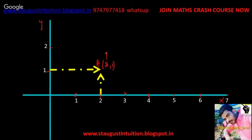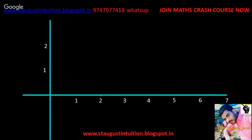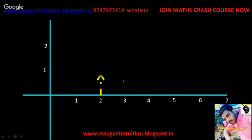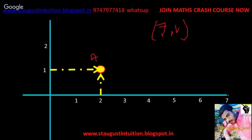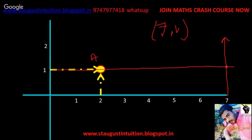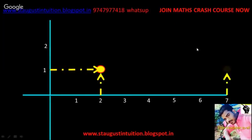The first coordinate is on the X-axis, the second coordinate is on the Y-axis. For point A we write (2,1), and for point B we write (7,1). This is point A and this is point B — both are now marked clearly.